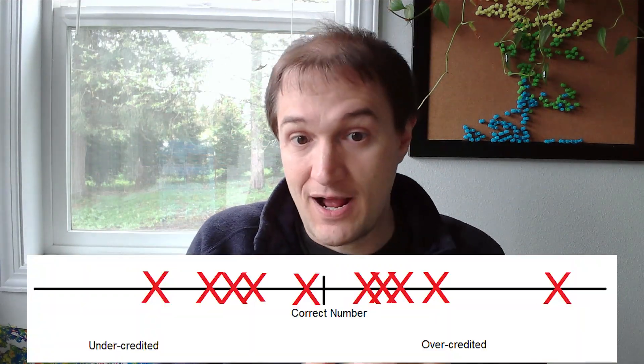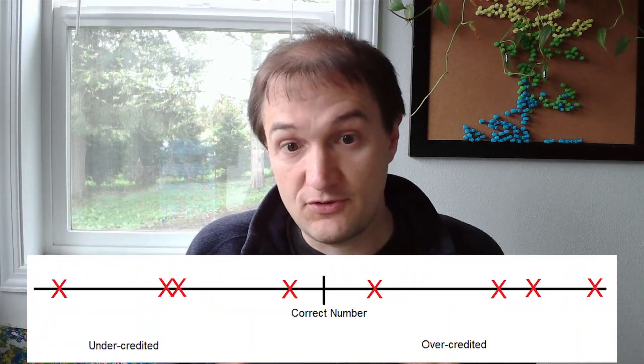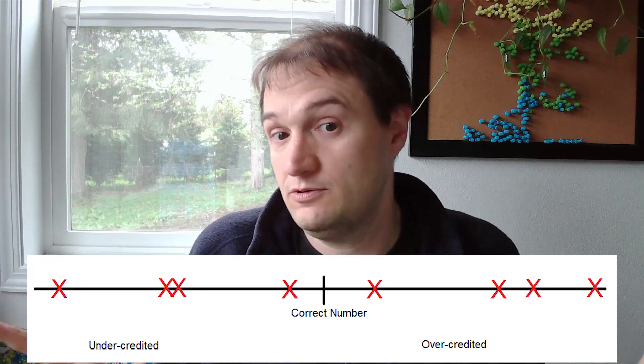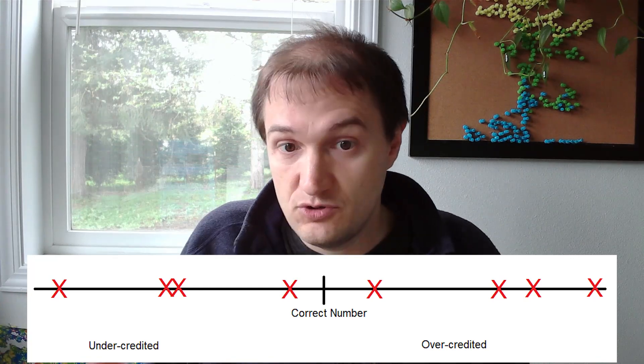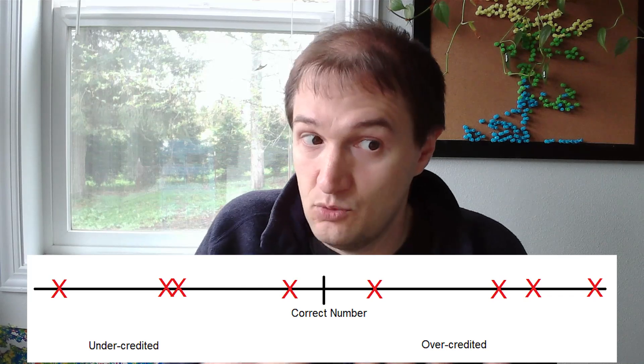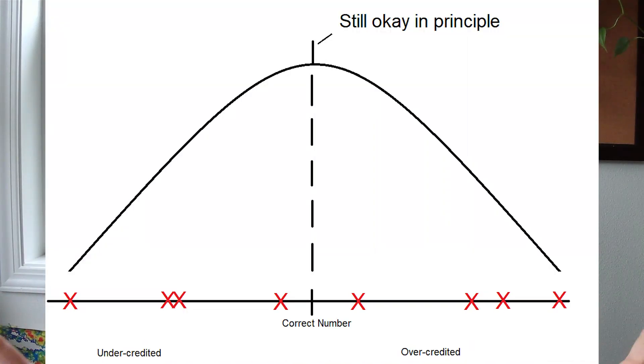Then you have your kind of lower effort methodologies. Those out there that, for example, say you can just use a regional average. Well, in that case, you're not going to be as clustered around the center, but if you just use the regional average for a particular strata of forest, the central limit theorem still works out. You're still going to be around the center here. Some are going to be above the regional average, and some are going to be below the regional average, and your carbon methodology still produces the correct amount of carbon credits.